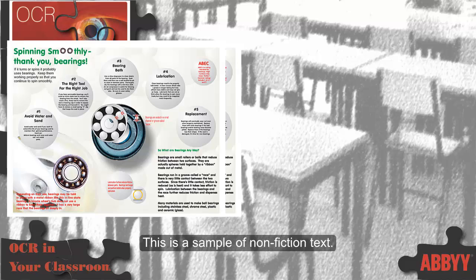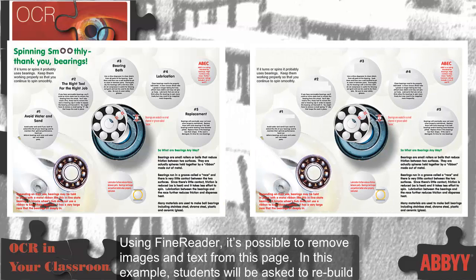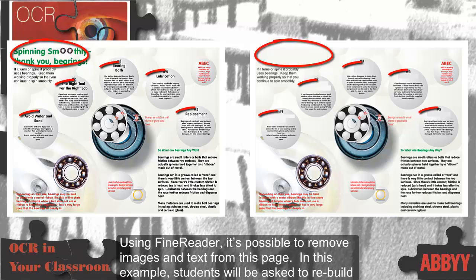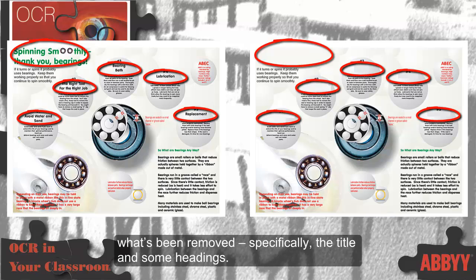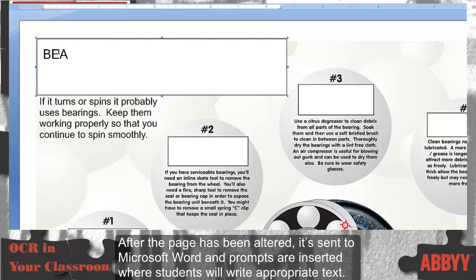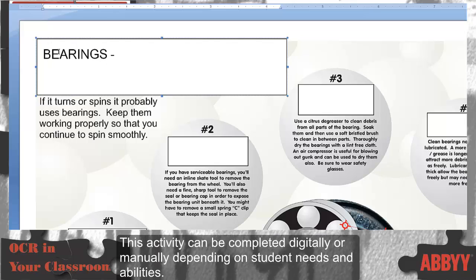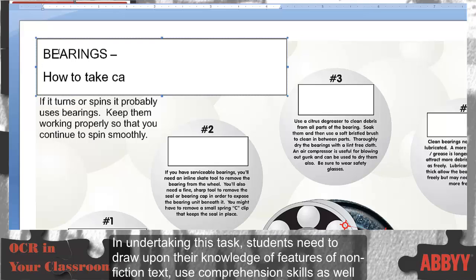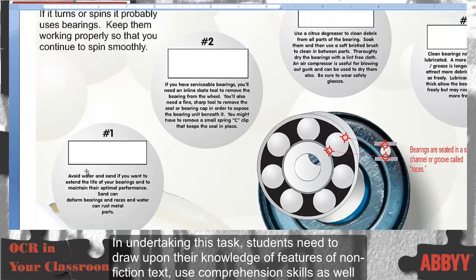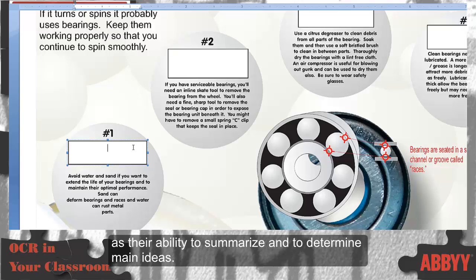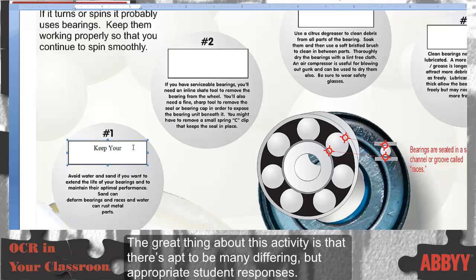This is a sample of non-fiction text. Using FineReader, it's possible to remove images and text from this page. In this example, students will be asked to rebuild what's been removed, specifically the title and some headings. After the page has been altered, it's sent to Microsoft Word, and prompts are inserted where students will write appropriate text. This activity can be completed digitally or manually depending on student needs and abilities. In undertaking this task, students need to draw upon their knowledge of features of non-fiction text, use comprehension skills, as well as their ability to summarize and to determine main ideas. The great thing about this activity is that there's apt to be many differing but appropriate student responses.